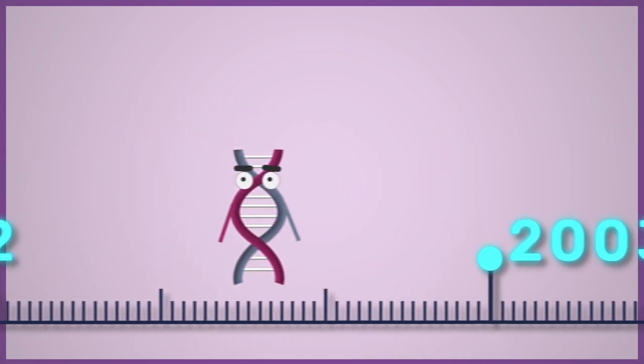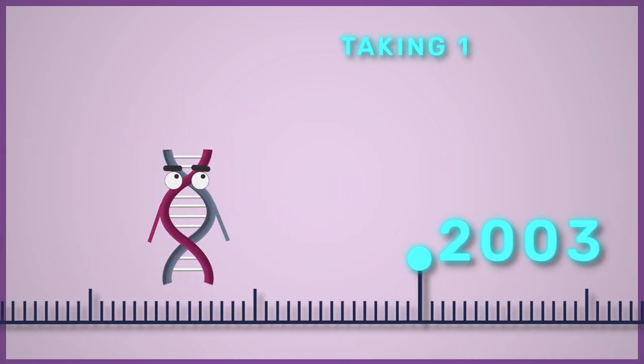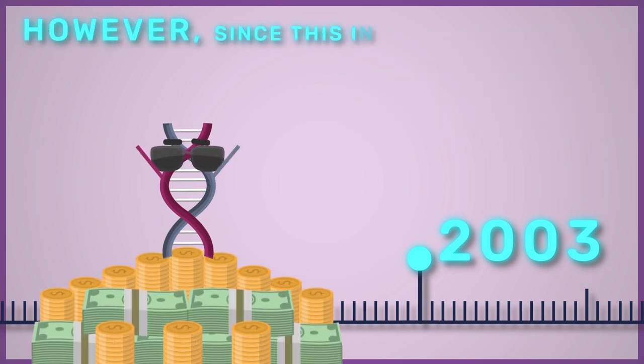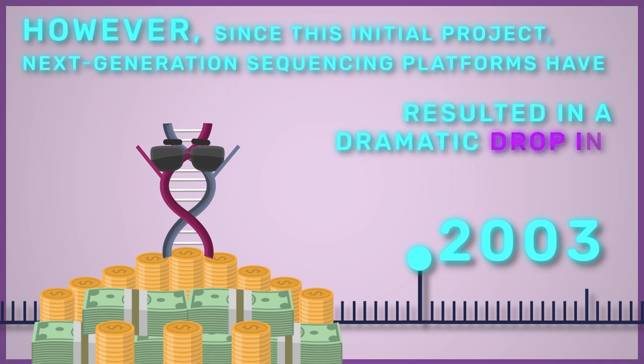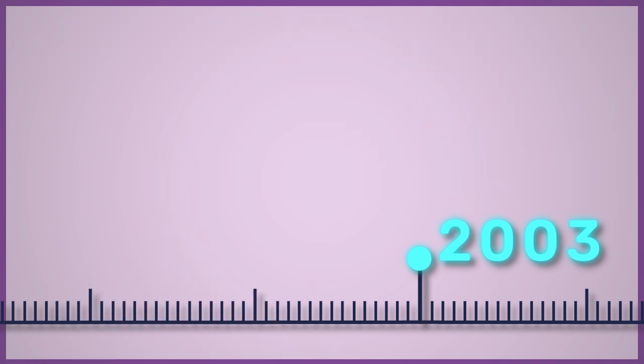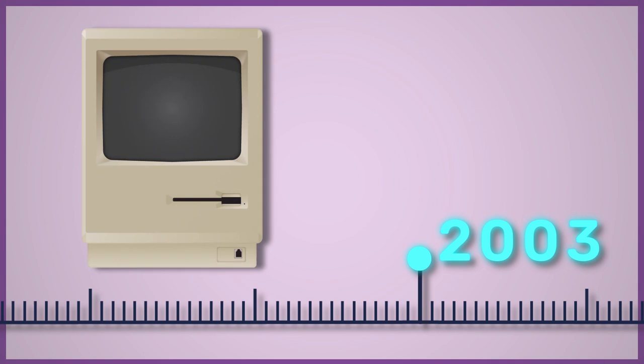The human genome was completed ahead of schedule in 2003, overall taking 13 years and costing approximately £2 billion. However, since this initial project, next-generation sequencing platforms have resulted in a dramatic drop in sequencing costs. For example, the same amount of data can now be generated in approximately six minutes for a few hundred pounds. This drop in price has made genomics a reality for use on an individual level, in clinics and as part of research.